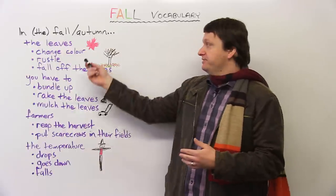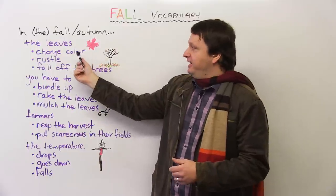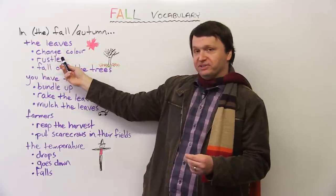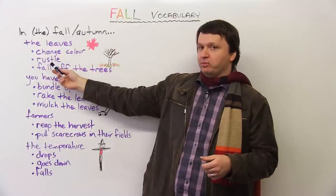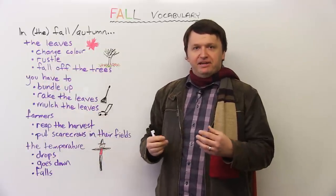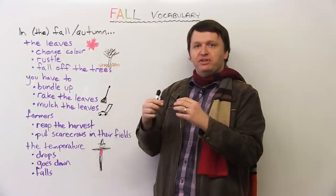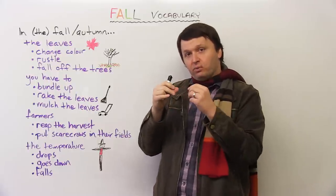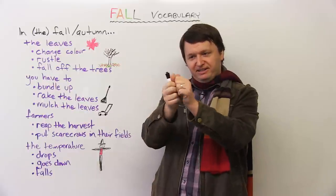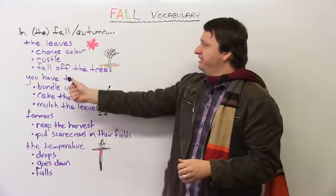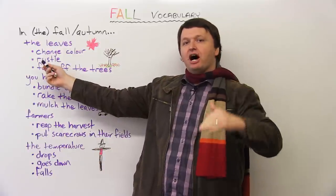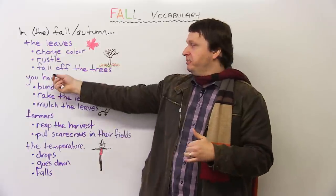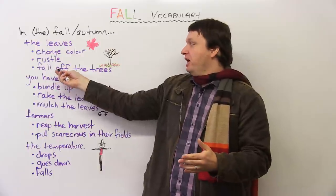So speaking of leaves, here's a lovely Canadian maple leaf. The leaves in the fall, we can say, change color. They rustle. Now, if you're not familiar with the verb rustle, it refers to the sound that the leaves make when the wind blows through them. So when you have the leaves going like this, the leaves start rustling. They make sounds like they're rubbing and crunching against each other. And again, we say the leaves fall off the trees. We don't really say they fall the trees or they fall down the trees. The most common expression, very useful, is just fall off the trees.